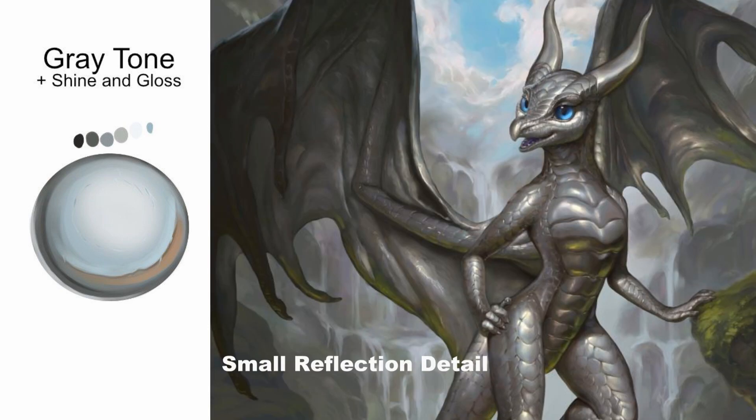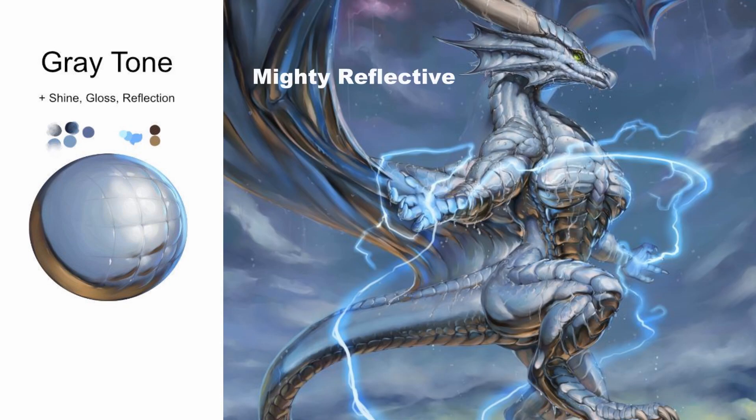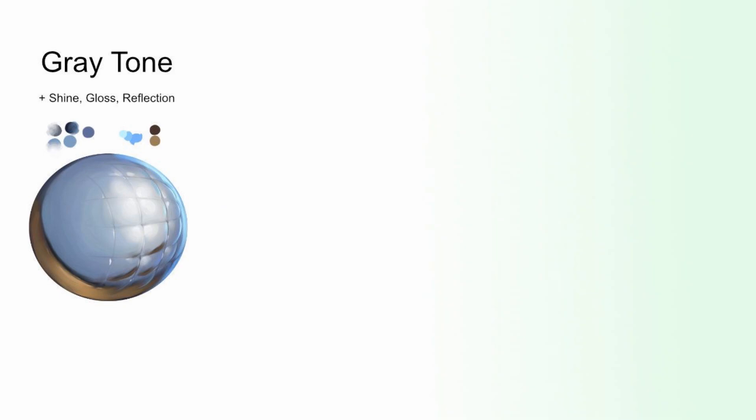Gray tone with shine and gloss — small reflections and details will start to appear on the higher polished surface. The contrast between shadows and highlights becomes a lot more prevailing throughout the body. And finally, gray tone with shine, gloss, and reflection — it's almost a chrome light reflection surface. The most polished surfaces will always reflect everything around them without a problem.